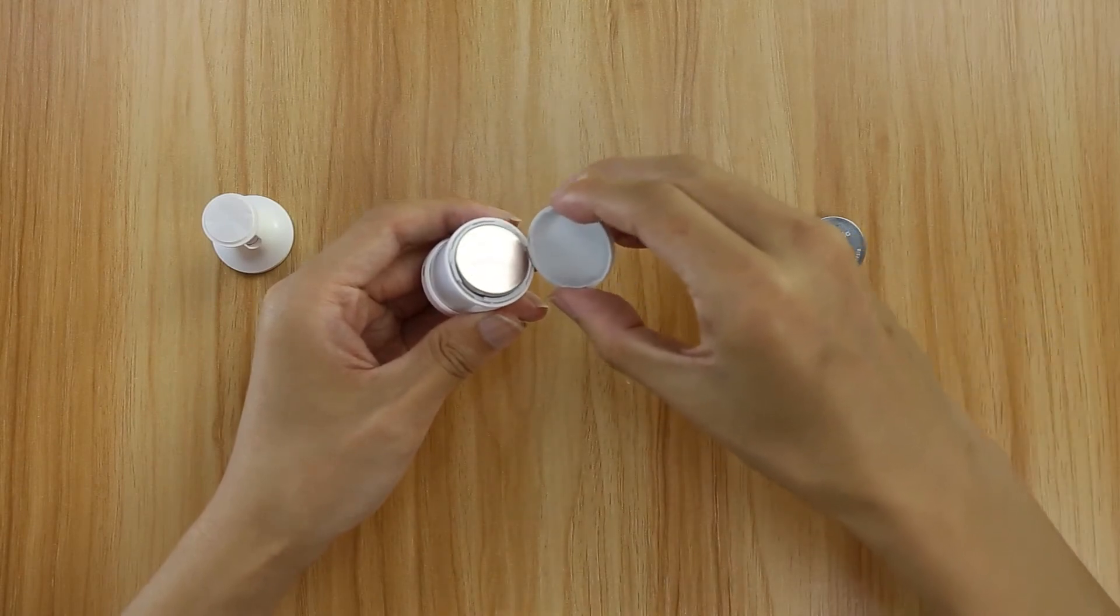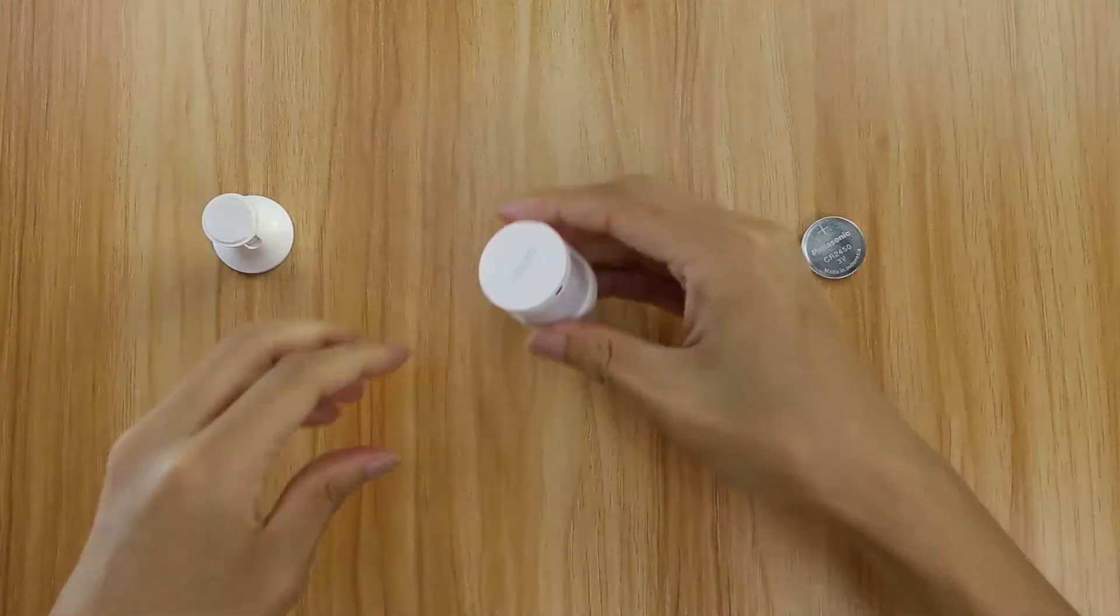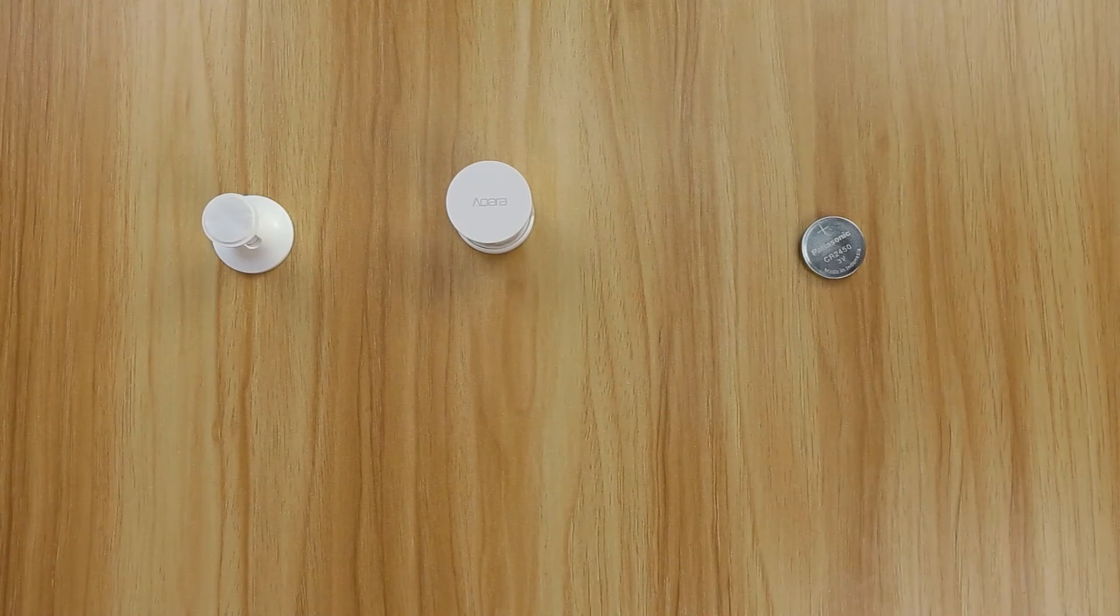Align the markers of the battery cover with the markers on the motion sensor. Close up. Turn the battery cover clockwise to tighten it. The battery cover is successfully attached.